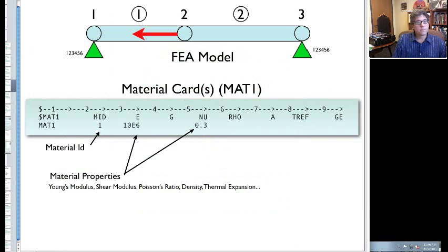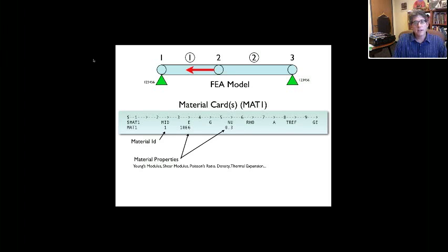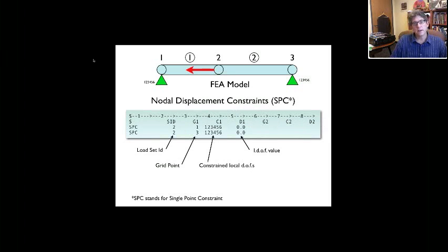The next thing has to do with specifying the boundary conditions. There's two types of boundary conditions we talked about earlier - the displacement constraints and then the load constraints. And I think I'll probably pause this video here so I can get it under the YouTube limit. And then I'll talk about boundary conditions in the next video, and then we'll run it and look at the results.